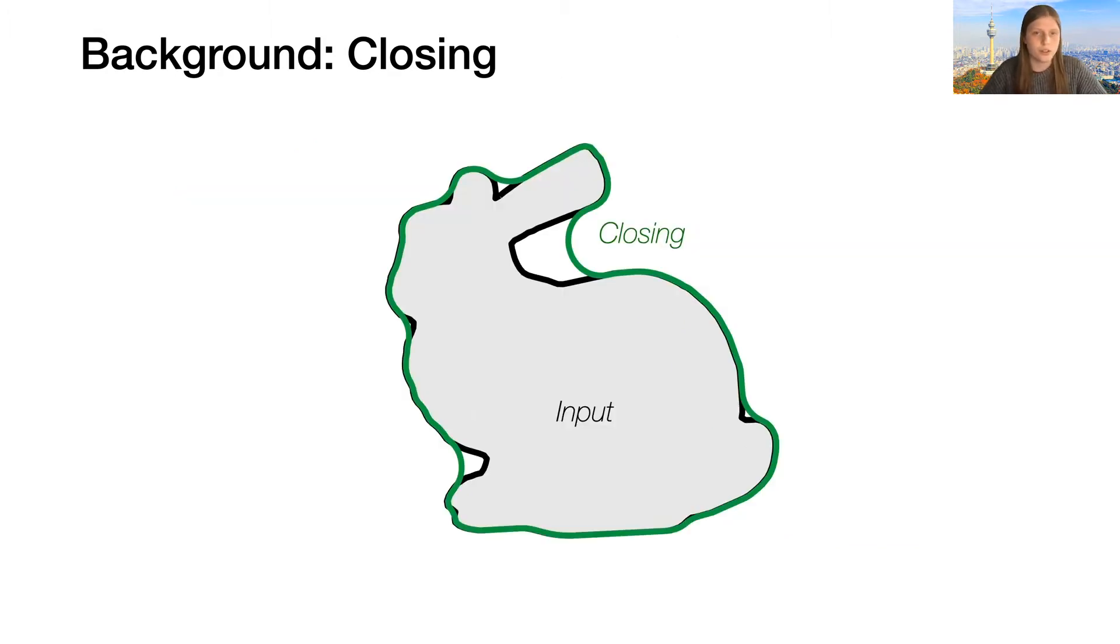We'll focus this talk on the closing, but since these are dual operations of each other, every observation that we make about one is also valid for the other. We've defined closing as a composition of the dilation and erosion, but there's actually an alternative, more intuitive definition, which we'll find more useful.